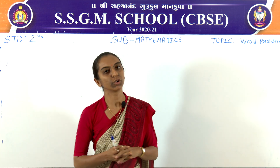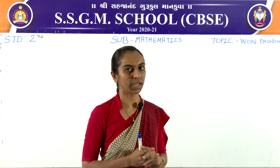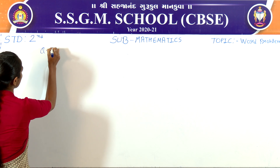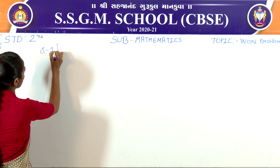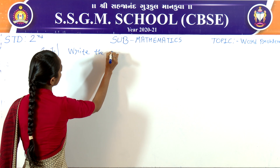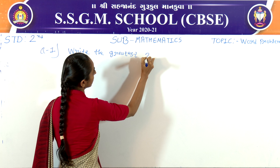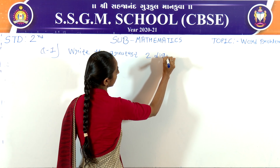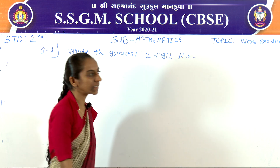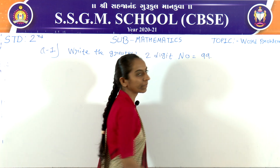You already know that the greatest two-digit number is 99. The first question is: write the greatest two-digit number. The answer is 99.